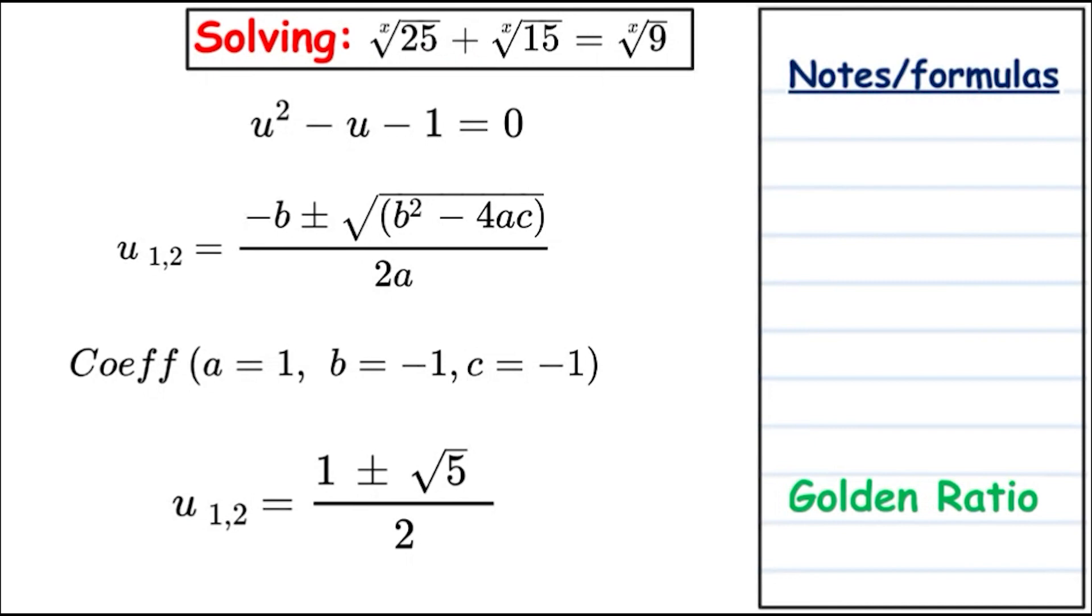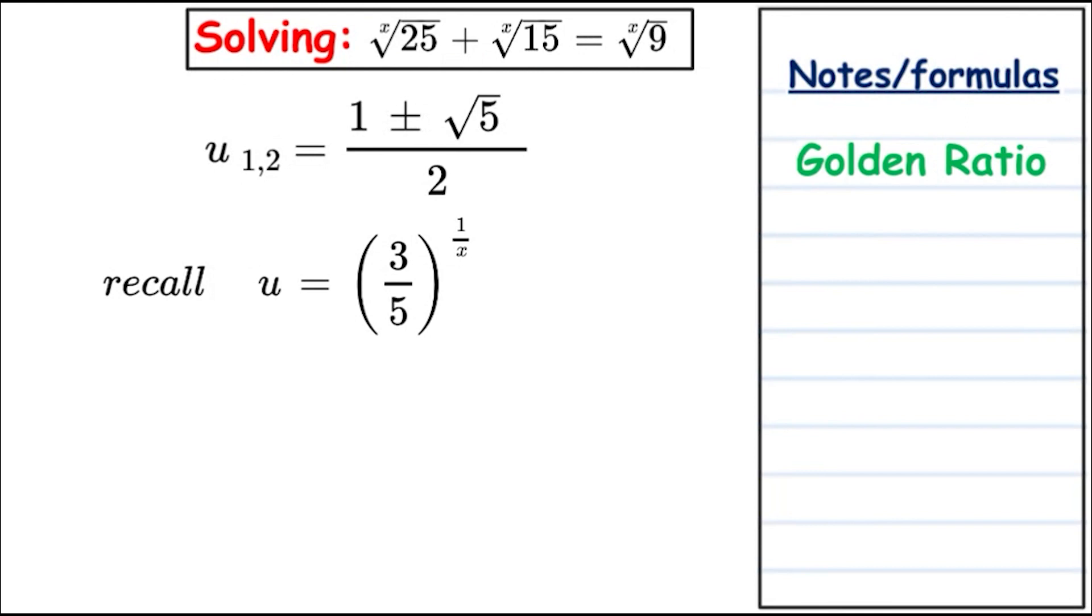Now we're going to revert back and solve for x. Remember, u is equal to 3 fifths to the power of 1 over x. Let's replace it back. We have a power and an exponential equation now, and we need to solve for the 1 over x. We're going to use this for both cases and let's see if we can get one or two results.